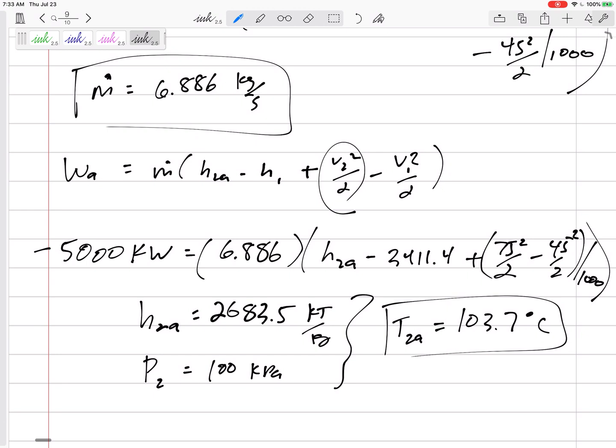For these problems, be able to handle property tables. This one was steam, so we were looking at the property tables to get h and things like that. But if this was air, if this was an ideal gas, we have different equations for ideal gases to find the temperature, isentropic temperature actual.